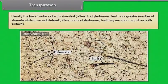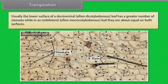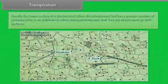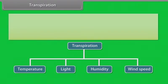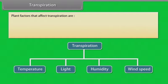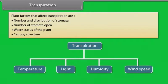Usually the lower surface of a dorsiventral or often dicotyledonous leaf has a greater number of stomata, while in an isobilateral or often monocotyledonous leaf, they are about equal on both surfaces. Transpiration is affected by several external factors like temperature, light, humidity, wind speed. Plant factors that affect transpiration include number and distribution of stomata, number of stomata open, water status of the plant, canopy structure, etc.